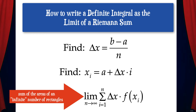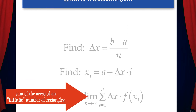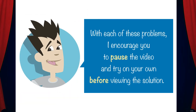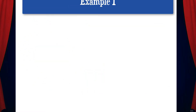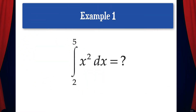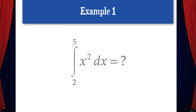Now let's do some example problems. I encourage you to pause the video and try on your own before viewing the solution. Example 1: here we have the integral from 2 to 5 of x squared dx. Let's write this integral as the limit of a Riemann sum.